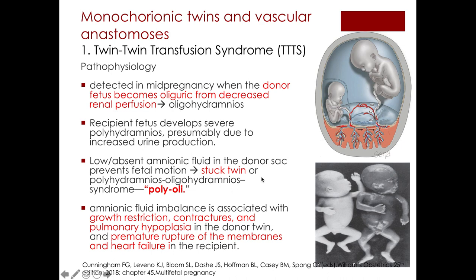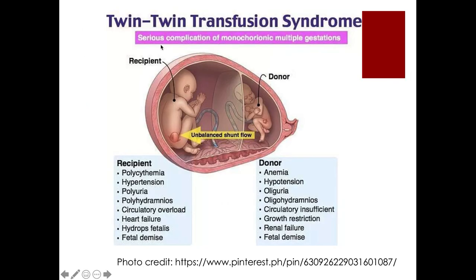The amniotic fluid imbalance is associated with growth restriction, contractures, and pulmonary hypoplasia in the donor twin, and premature rupture of membranes and heart failure in the recipient twin. The recipient twin may develop polycythemia, hypertension, polyuria, polyhydramnios, circulatory overload, heart failure, hydrops fetalis, and fetal demise, while the donor twin may experience anemia, hypotension, oliguria, oligohydramnios, circulatory insufficiency, growth restriction, renal failure, and fetal demise.